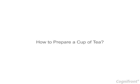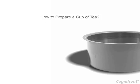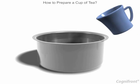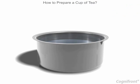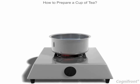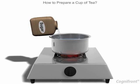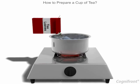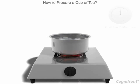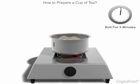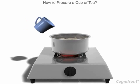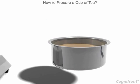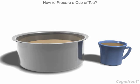Let's talk about how to prepare a cup of tea. First of all, take an empty vessel. Add a cup of water to the vessel. Place the vessel on the stove. Add sugar to the water. When water starts boiling, add tea leaves to the water. Allow the water to boil for 5 minutes. Now add a cup of milk to the mixture. Remove from the flame.